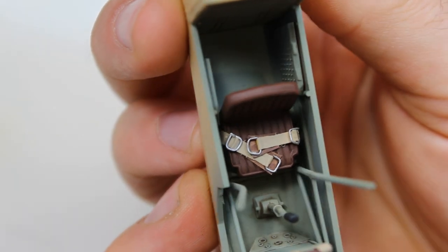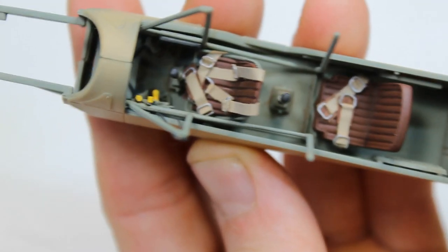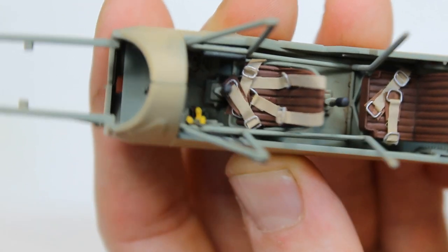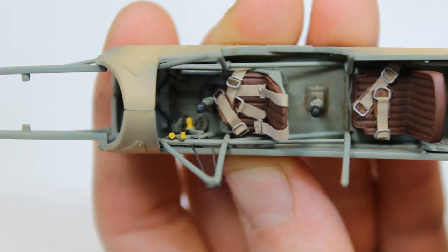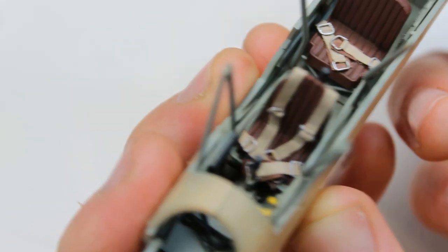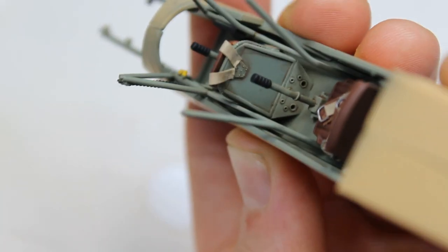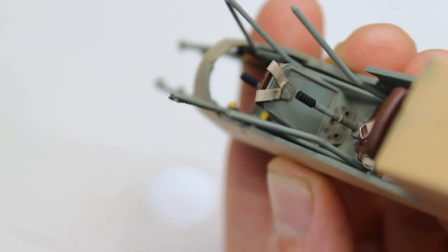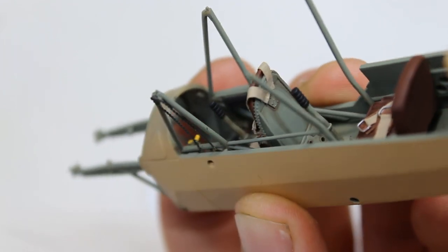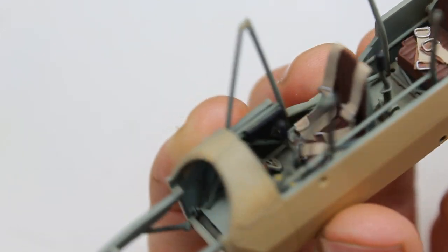This being 1:35 scale, there wasn't a lot of belts readily available in that scale—it's more 1:32 for aircraft. So I thought I'd go on and make these myself. It didn't take too long, it's just an evening's work to get those sorted, and it really livens up the cockpit.